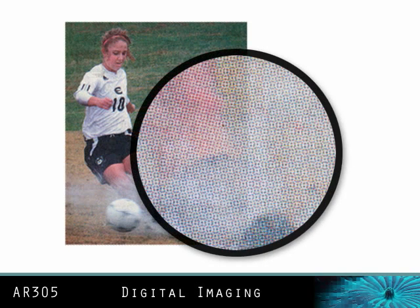A close-up look at the newspaper example reveals the halftone dots of ink used to reproduce this continuous tone image at 100 LPI. Because of the poor quality of newsprint, you will notice that the halftone dots are not very crisp or sharp. One reason that newspapers do not print with a higher resolution halftone line screen is because of the poor quality of paper — the smaller halftone dot would not hold up on this type of paper.